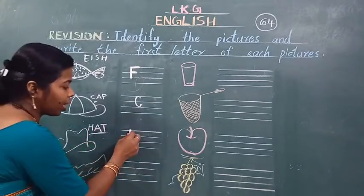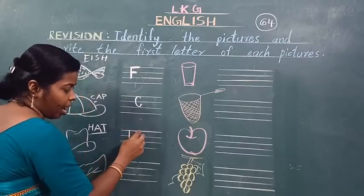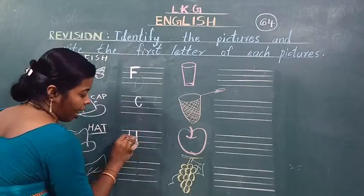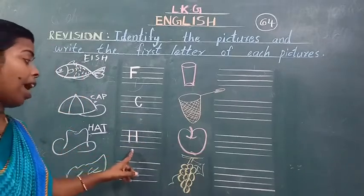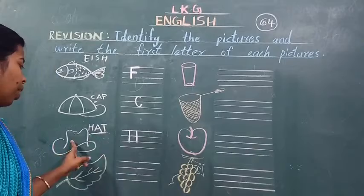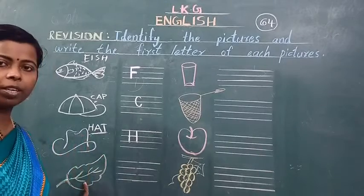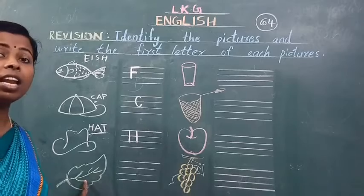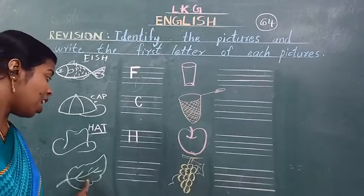H kaise likhena? Deekho — standing line, again standing line, and sleeping line. This is H — H for hat. And see the next picture. What is this? Ye kya hai? Ye leaf hai. This is a leaf.